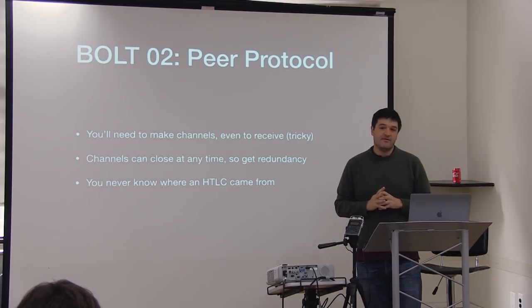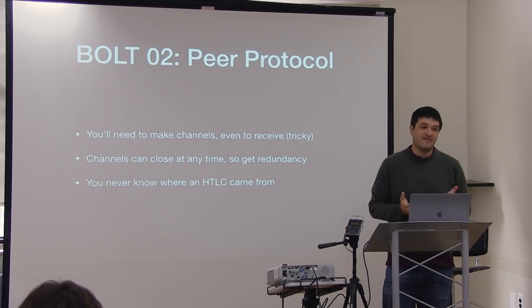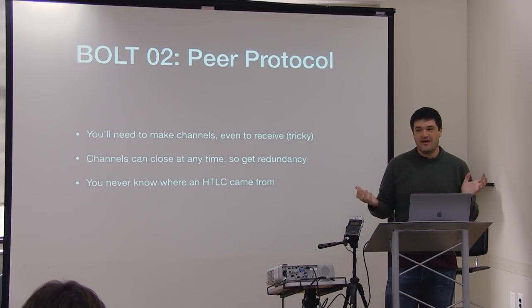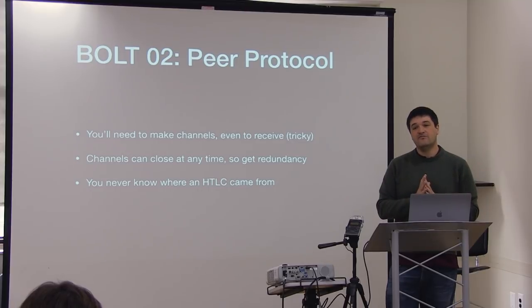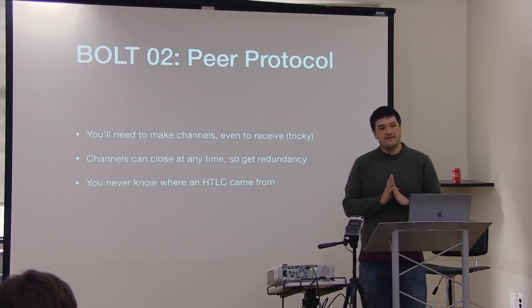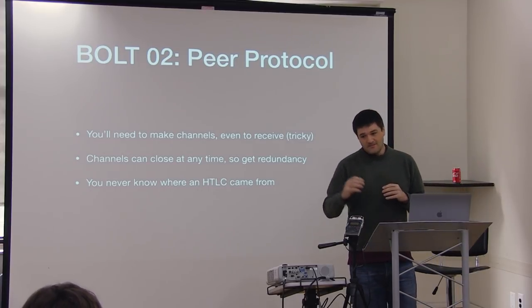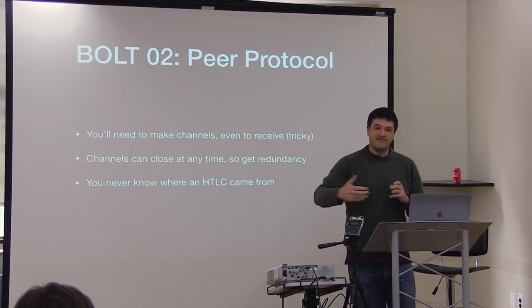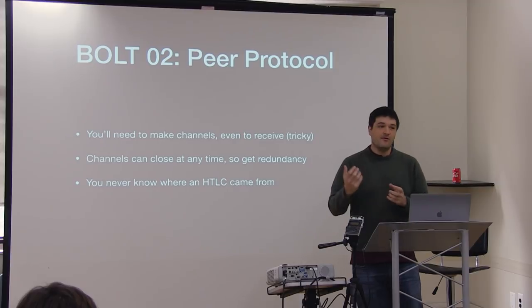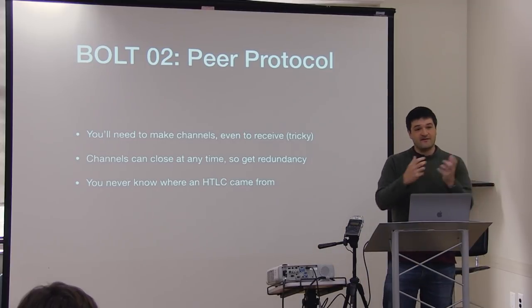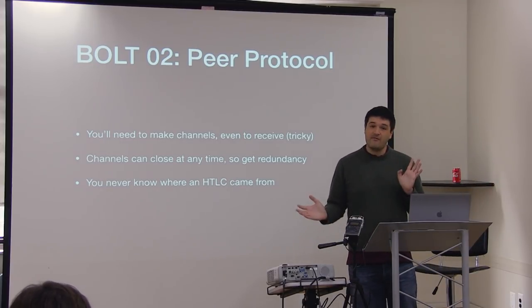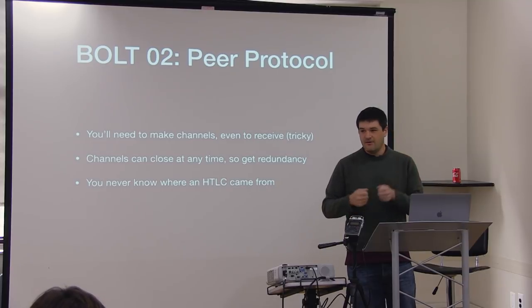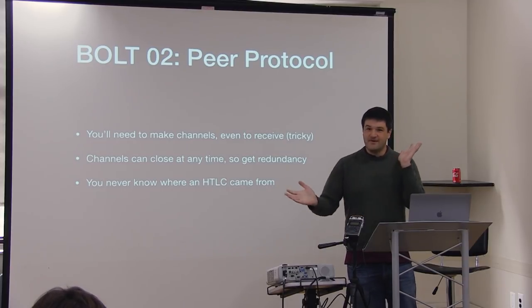An interesting thing about the peer protocol, different from Bitcoin or normal chain transactions, is that you have no idea who sent you money. You can know which peer sent you the money, but you don't know where it originated because people are swapping secrets. This could even take place outside of the Lightning Network - you could just tell someone the secret in exchange for some money, using any kind of way to swap secrets.